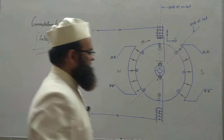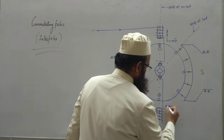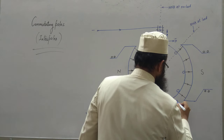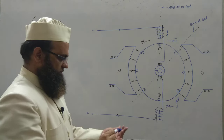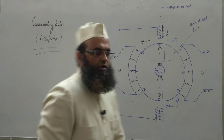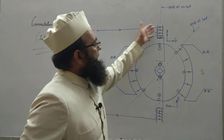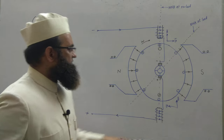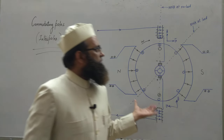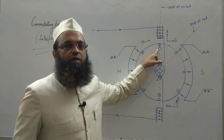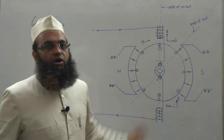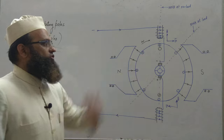Similarly, checking the other side: the direction of V is this way (rotating clockwise) and the direction of B is again upward. So V×B gives movement into the plane, indicated by a cross. Therefore, the windings of the interpoles are connected in series with the armature windings in such a way as to produce fluxes in the direction that induces EMF in the coils undergoing commutation with polarity opposite to that induced by the two voltages creating the sparking problem. This is how commutating poles cancel the effect of sparking.